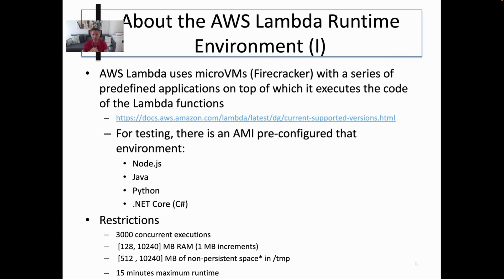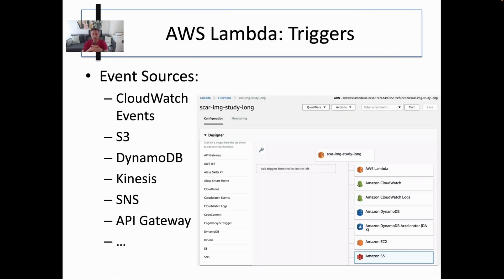Lambda uses micro-virtual machines, and there are some Amazon Machine Images pre-configured for this environment, which facilitates the development of applications before running them on AWS Lambda. It allows 3,000 concurrent executions, up to 10 GB of RAM, up to 10 GB of non-persistent scratch space in /tmp, and a 15-minute maximum runtime. If your application fits within these execution constraints, you can benefit from the highly scalable capacities of AWS Lambda — since 3,000 concurrent executions are orders of magnitude beyond the number of virtual machines you can deploy in an AWS account with the soft limits initially defined.